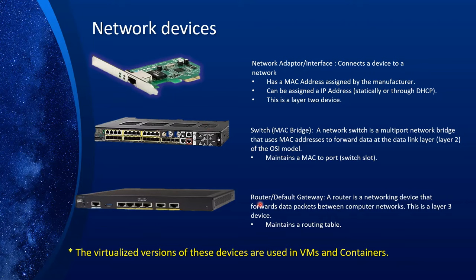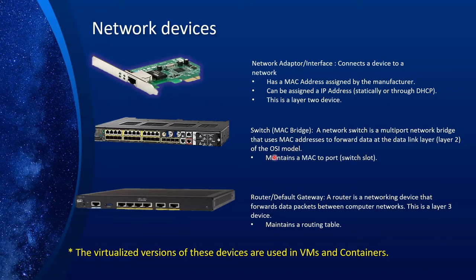The next one is a router, also called a default gateway. A router is a networking device that forwards data packets between computer networks. This is a layer three device and it maintains a routing table. When your computer is getting out of its subnet and going to a different network, such as the internet, the router uses its routing table to assist the layer two communication — that is, the Ethernet frames — in determining how to get to the next hop.